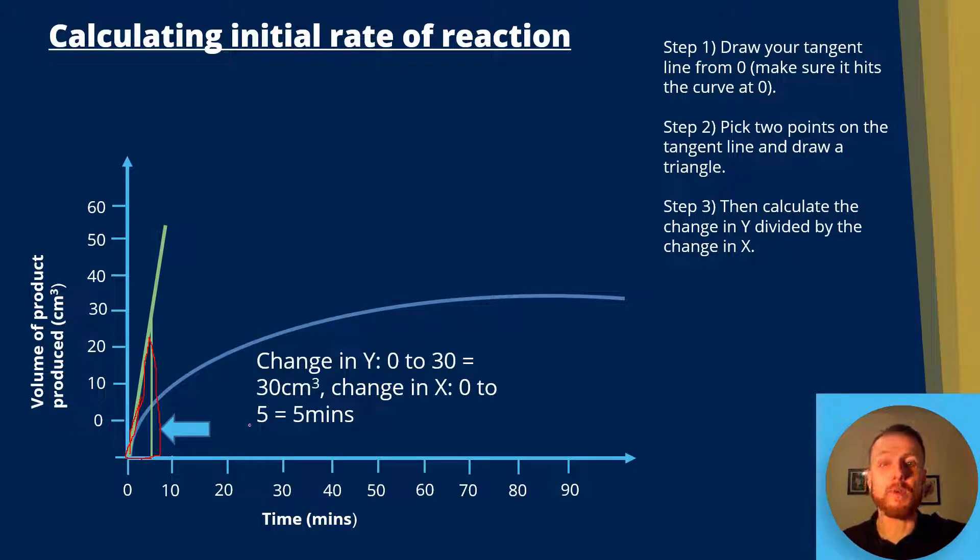So in this case, y, we go from zero at the bottom here, all the way up if we go across to 30. Now remember mine is just an example, so you'd obviously use a pencil and ruler in the exam. So zero to 30, our change is 30 centimeters cubed because we use the unit of the y-axis. Now our x is from zero to five minutes because we've gone from zero here across to five minutes.